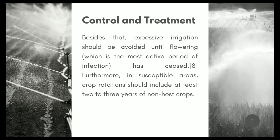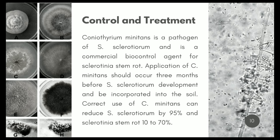Furthermore, in susceptible areas, crop rotations should include at least 2 to 3 years of non-host crop. Coniothyrium minitans is a pathogen on Sclerotinia and is a commercial biocontrol agent for Sclerotinia stem rot. Application of C. minitans should occur 3 months before Sclerotinia development and be incorporated into the soil. Correct use of C. minitans can reduce Sclerotinia stem rot by 95% and crown rot by 10–70%.